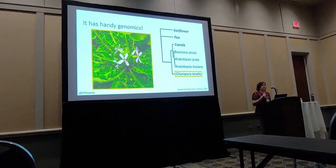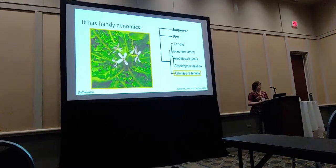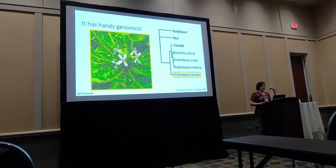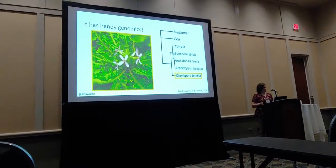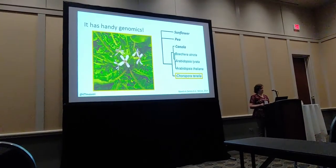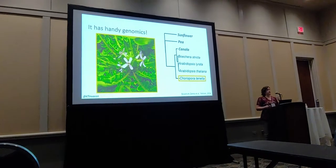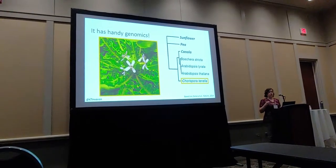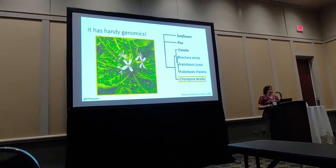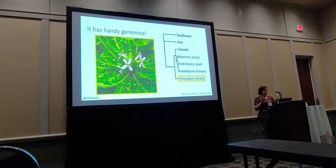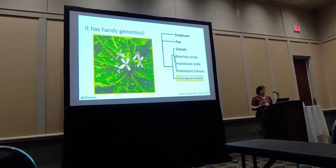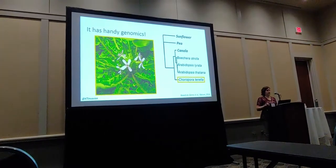This species has some really convenient characteristics from a genomics perspective. It's in the mustard family, which means there are significant genomic resources available for very closely related species. It's related to Arabidopsis, everyone's favorite model organism. It has a small genome — only about twice the size of Arabidopsis — and it's an annual, which means it's had more opportunity for recombination since the introduction event, which will increase our ability to identify causal genes underlying selective sweeps.